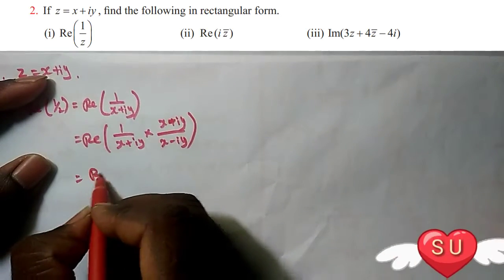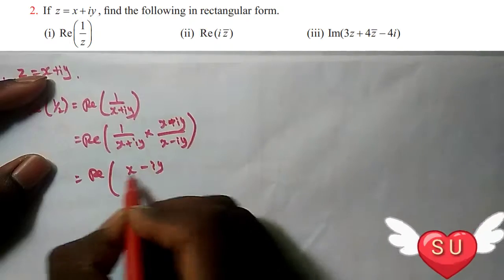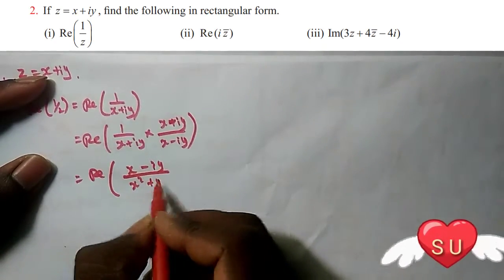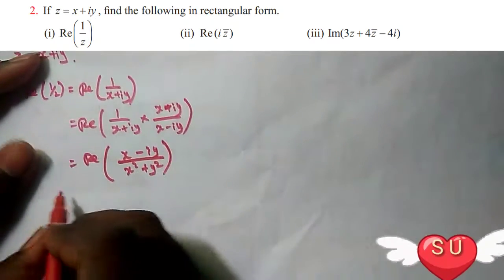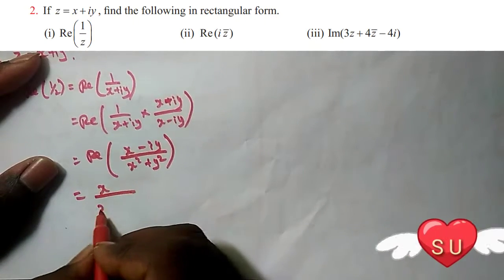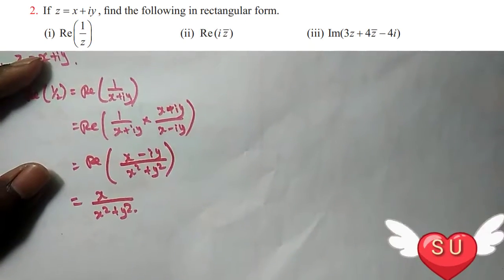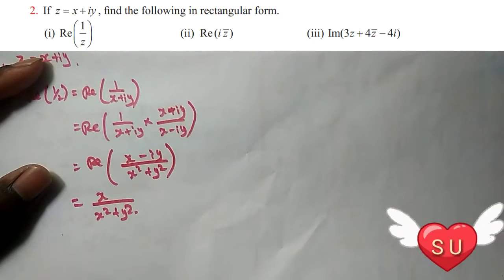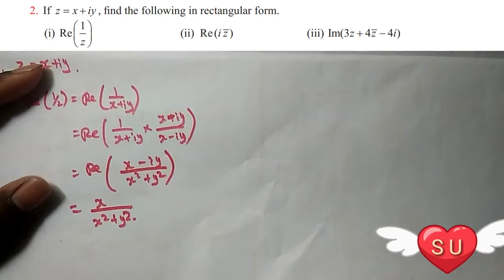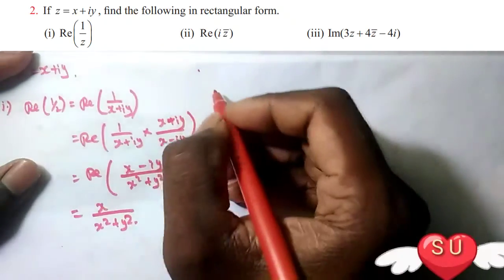So, real part of 1 divided by Z equals X minus iY divided by X squared plus Y squared. Therefore, the real part is X divided by X squared plus Y squared. So now we have shown the real part of 1 divided by Z.